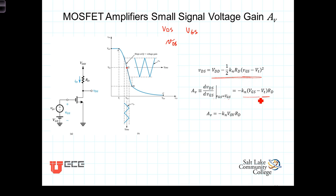When we do so, we get this expression right here, or equivalently recognizing that this is the overdrive voltage at the bias point, we get then the gain, the voltage gain, A_v is equal to negative K_n times V_OV times R_D.